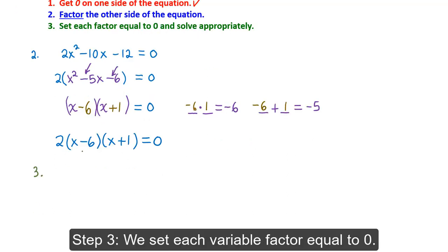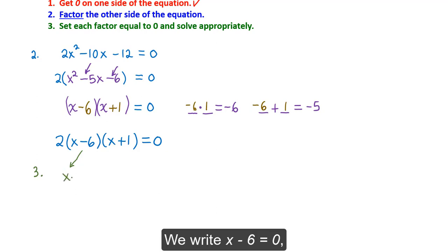Step 3. We set each variable factor equal to 0. We write x minus 6 equals 0. And we write x plus 1 equals 0.